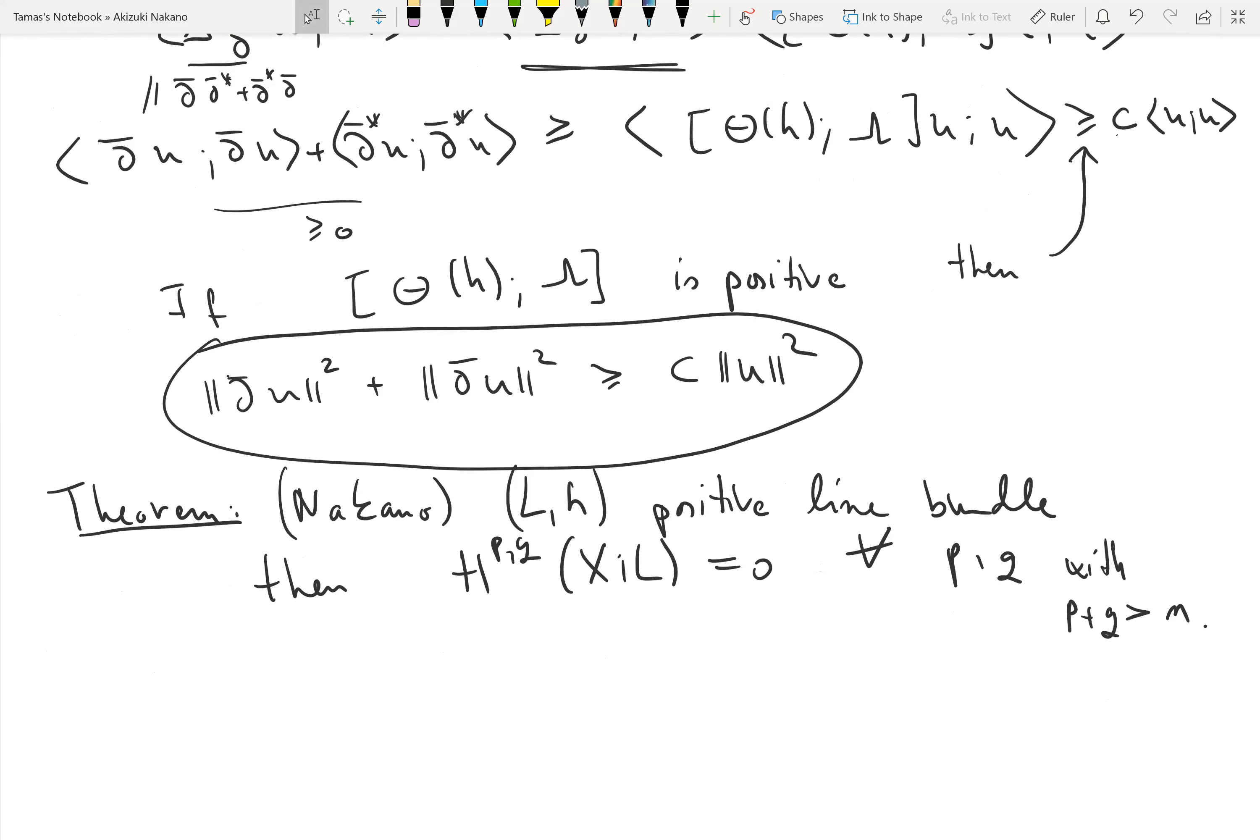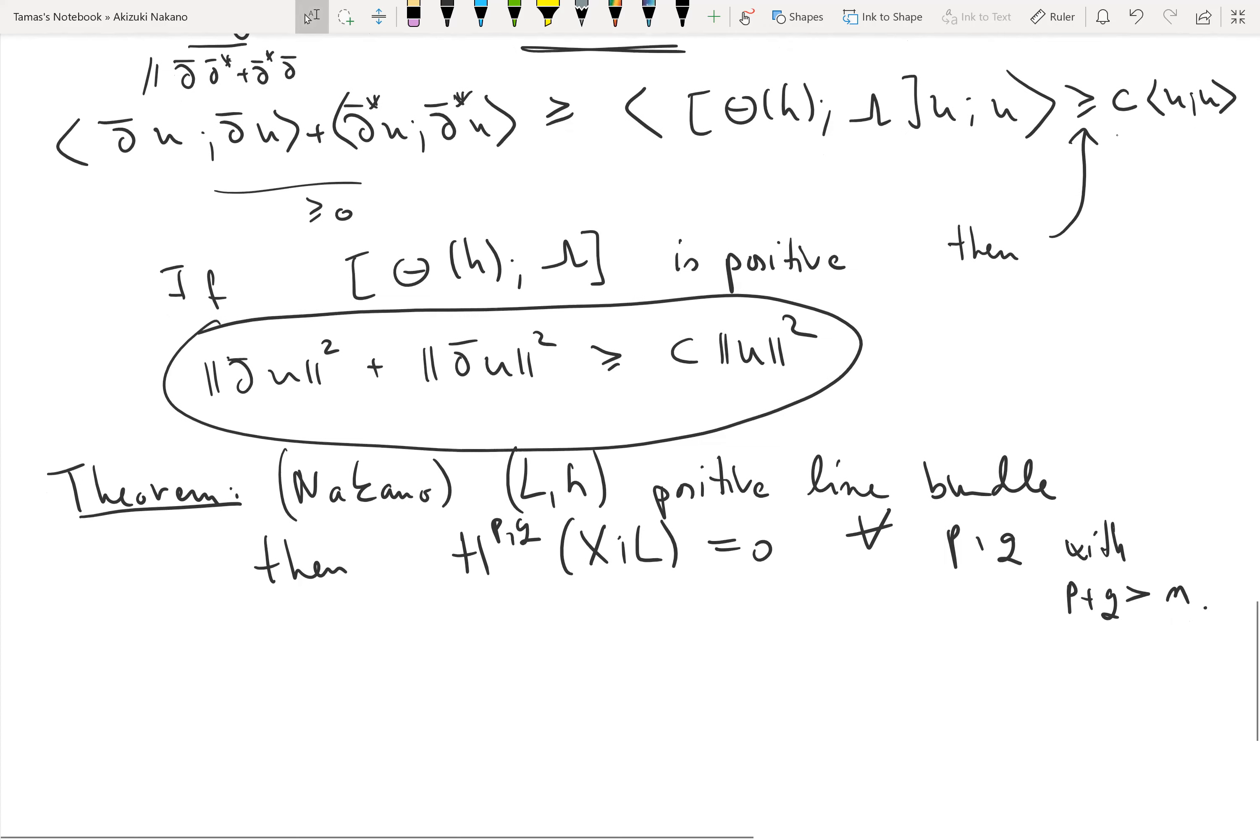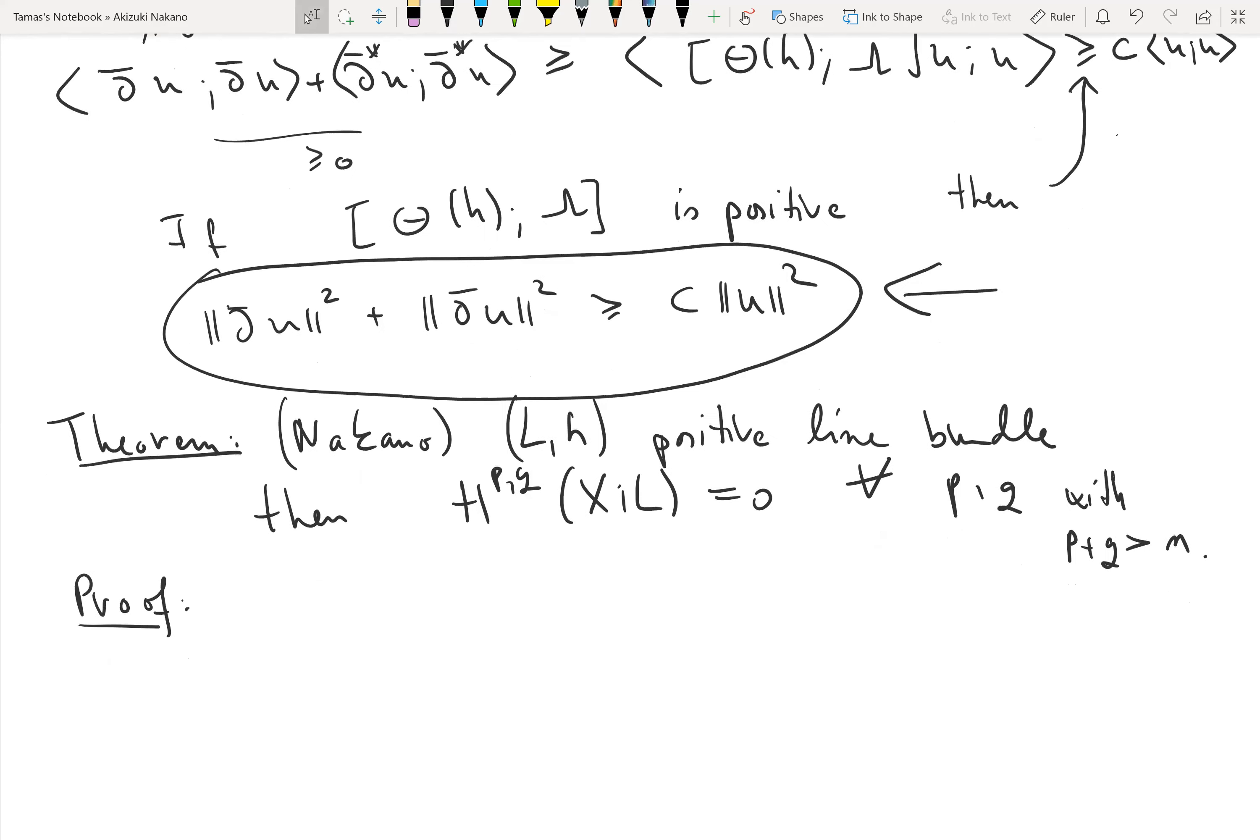Mind you, this is not true for all values p and q. Unfortunately in the previous lecture I wasn't careful enough about this. We're reviewing this result here. The Nakano vanishing theorem says that all the H^{p,q} cohomology groups vanish for a positive line bundle where p+q is greater than the dimension of the underlying manifold.